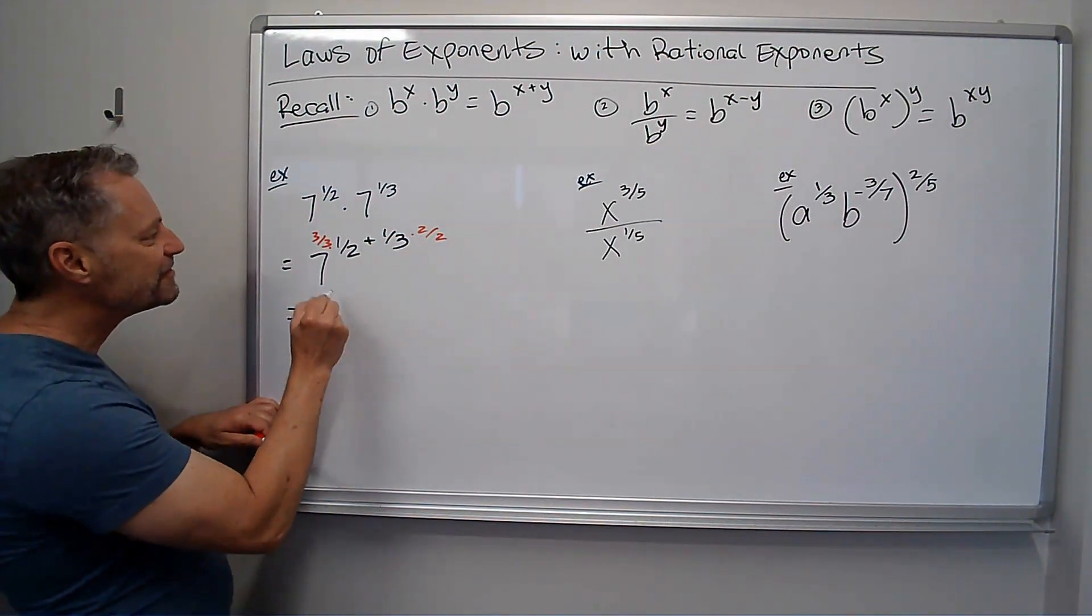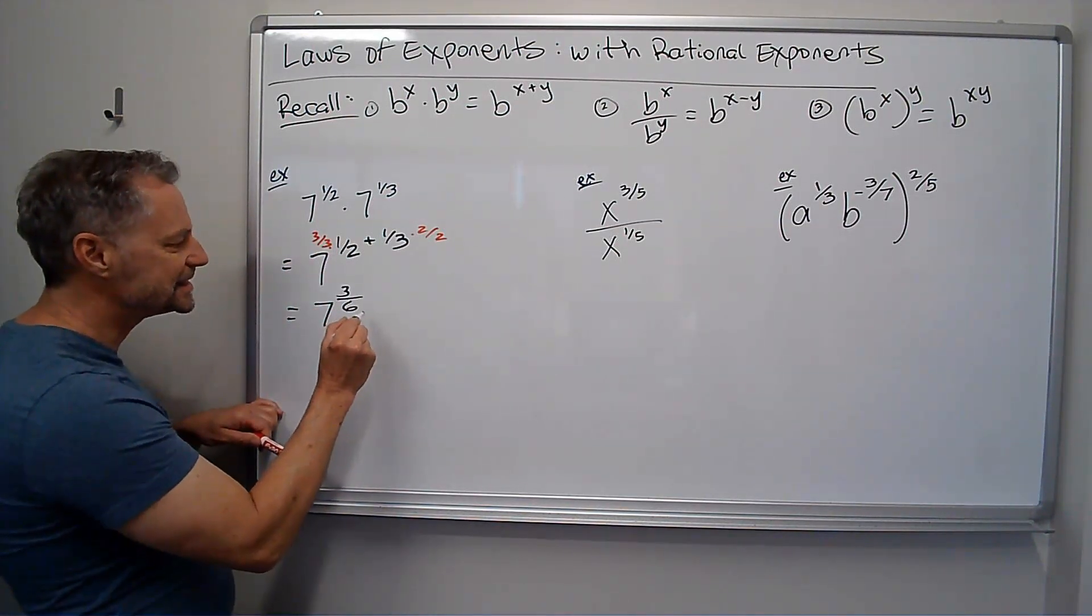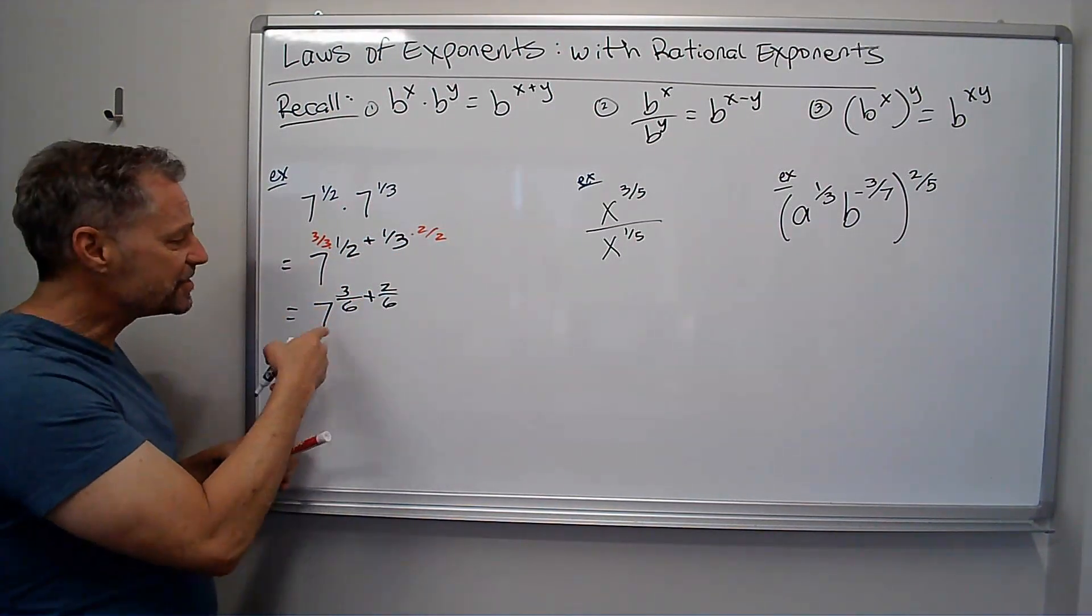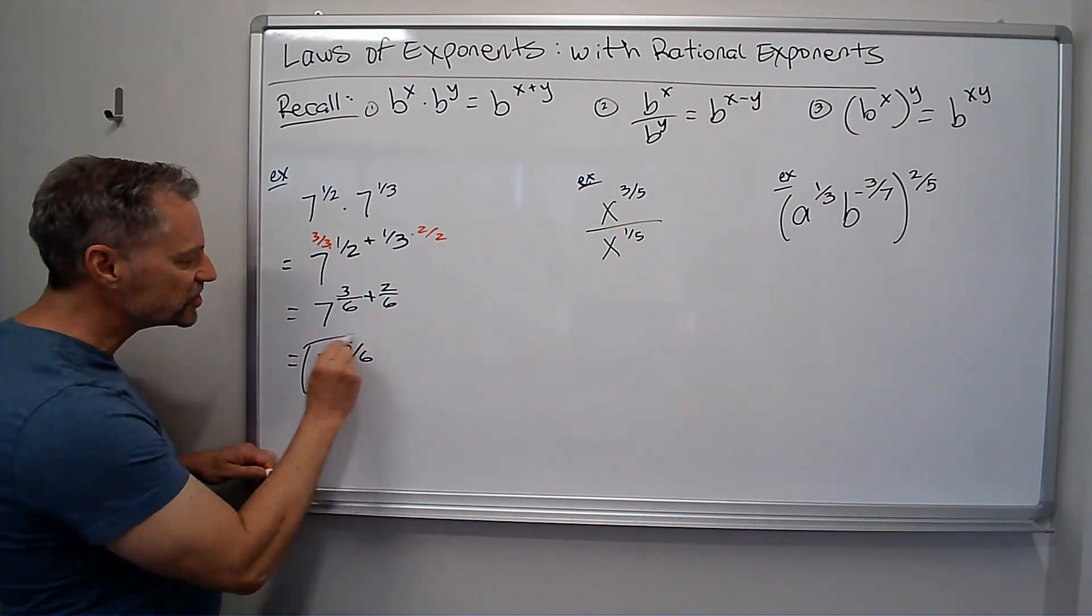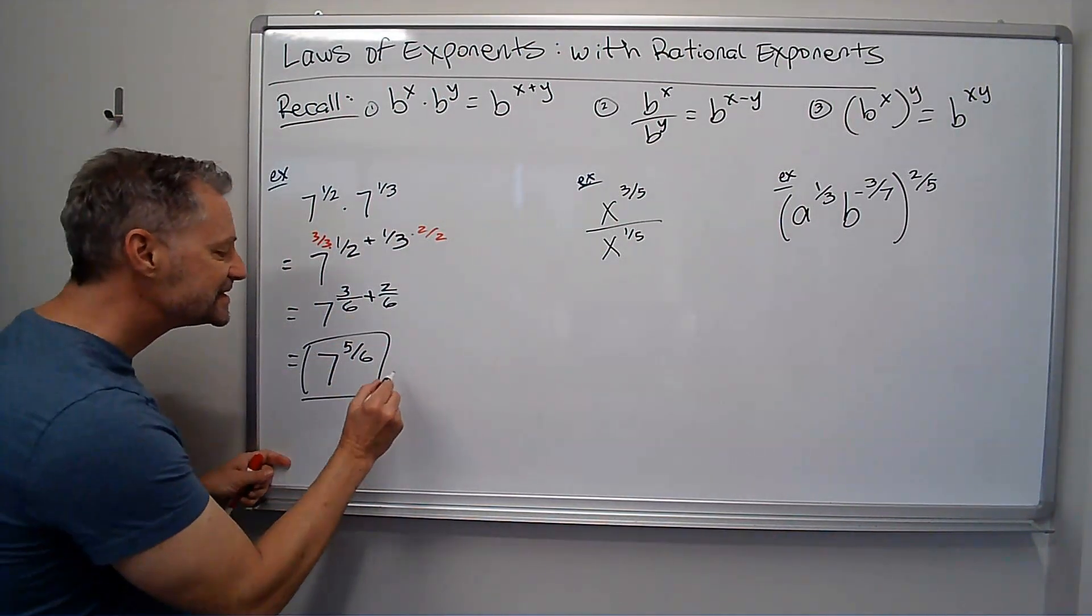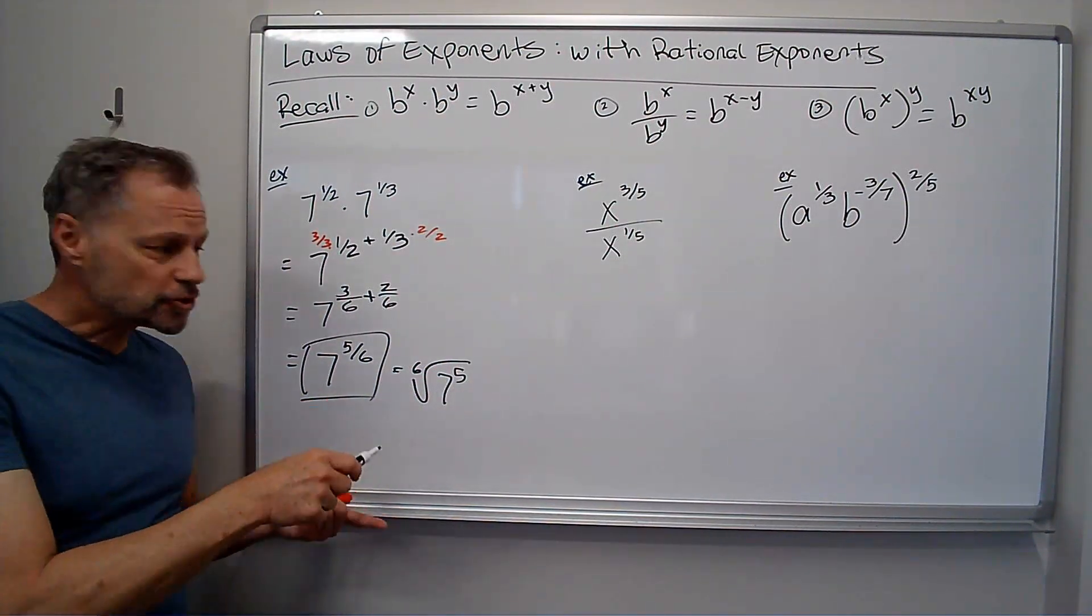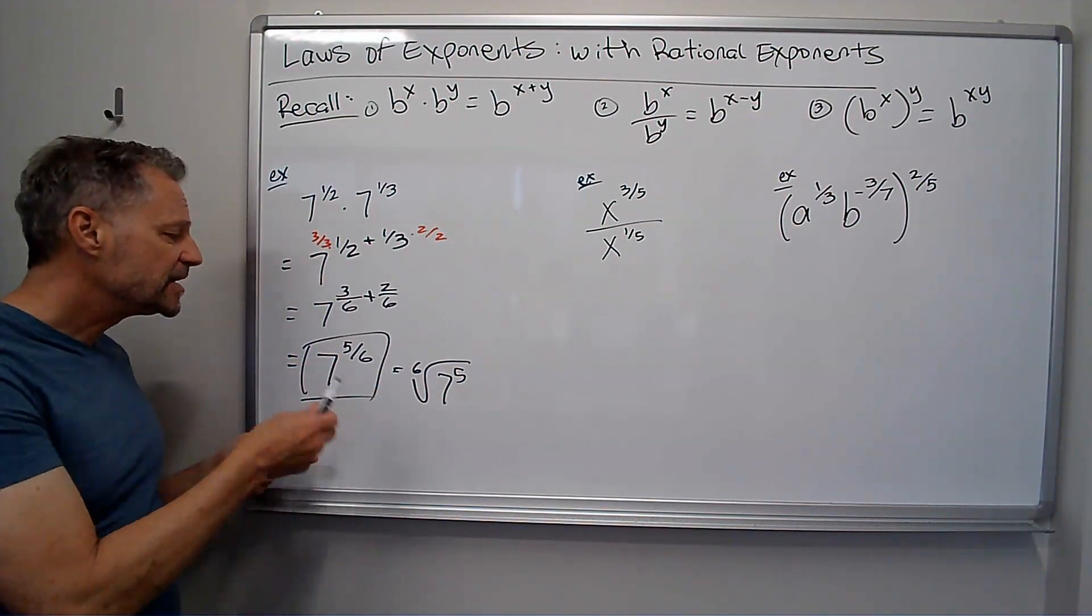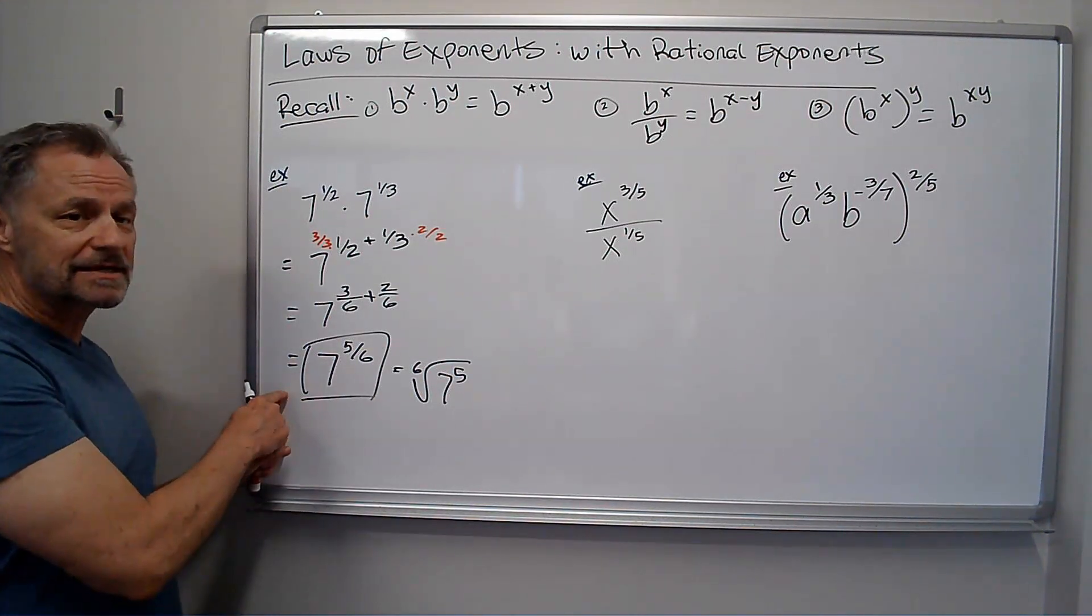And what I end up with, is I end up with 7 to the, well, 3 times 1 is 3, 3 times 2 is 6, 3 sixths plus 2 sixths. And now I can just add those together, keep the denominator, add the numerators, I get 7 to the 5 sixths, that's as far as I can go. I'm going to leave that there. I could, if I wanted to, say, hey, you know what, this is the sixth root of 7 to the fifth. That's true. Did it simplify? Did it help me out? No, there's nothing I could do there. But usually they'll just leave it at 7 to the 5 sixths. But this is an equivalent way to write. That's okay.